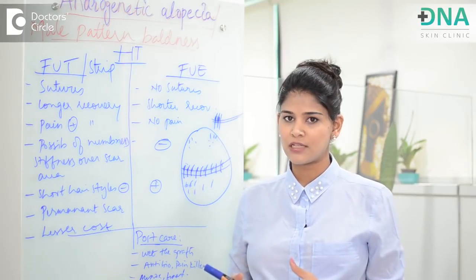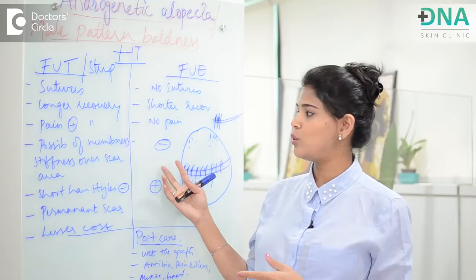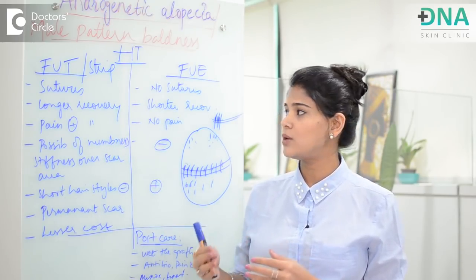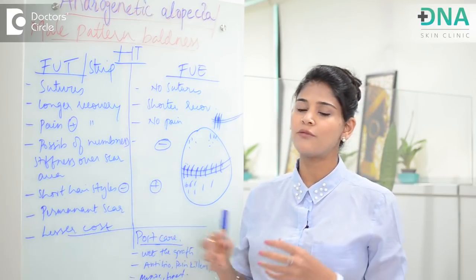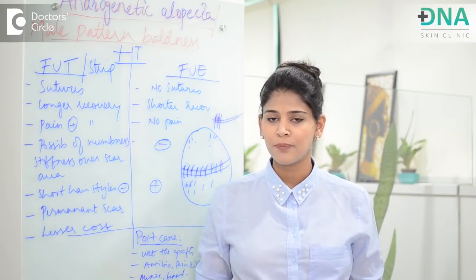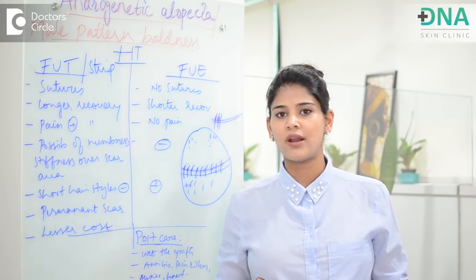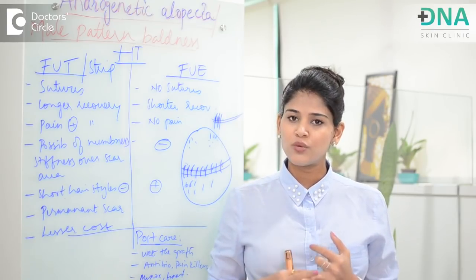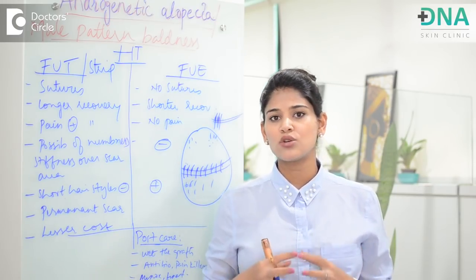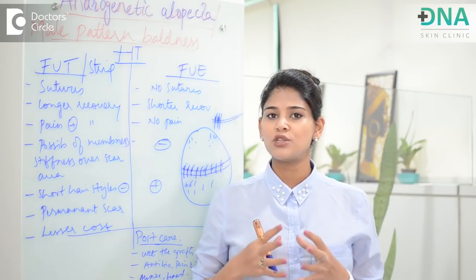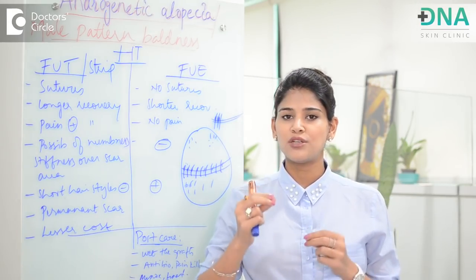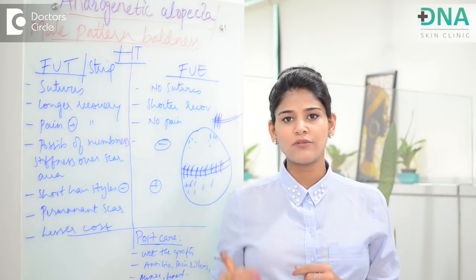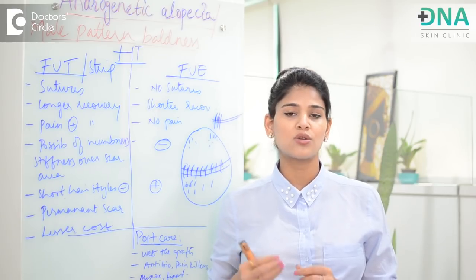Who are the candidates for hair transplantation — for FUT and FUE? After seeing the pros and cons of each procedure, the patient has to evaluate whether they want FUT or FUE after a detailed discussion with their dermatologist or surgeon. Who are not candidates for hair transplantation? Patients with uncontrolled diabetes or hypertension, patients with a poor donor area, patients with an undiagnosed cause of hair fall, and patients with trichotillomania — a psychological disorder wherein patients pluck their own hair follicles out. These are conditions where hair transplantation is contraindicated.